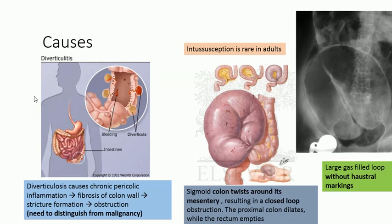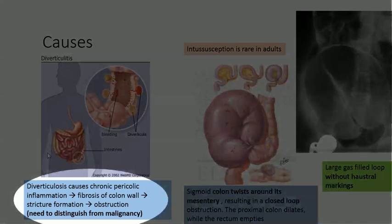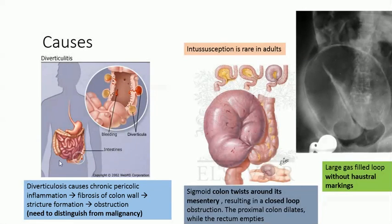Diverticulosis causes chronic pericolic inflammation, which causes fibrosis of the colon wall, and ultimately leads to stricture formation and obstruction. Now if there is a stricture formation inside the colon wall, you have to rule out malignancy, because malignancy also presents as stricture formation.